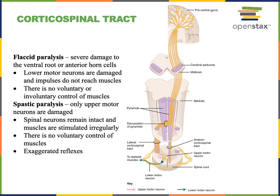Here we have an illustration showing the corticospinal tract, which is the major descending pathway — the descending tracts that carry motor commands down from the central nervous system to the peripheral nervous system. Nerves then travel from the spinal cord out through the peripheral nervous system to skeletal muscles to stimulate contraction of those skeletal muscles.